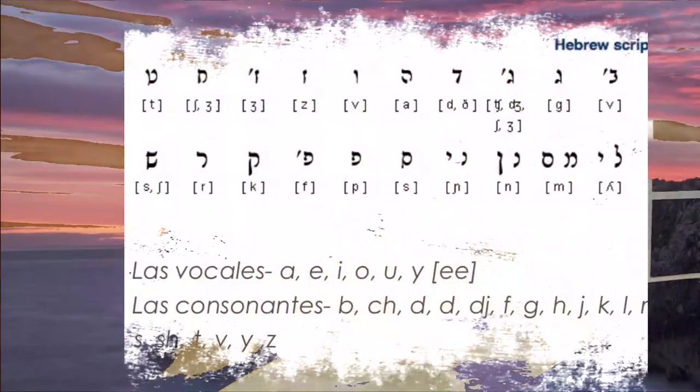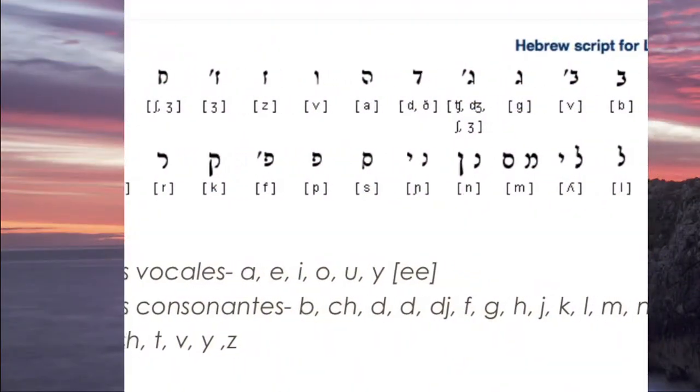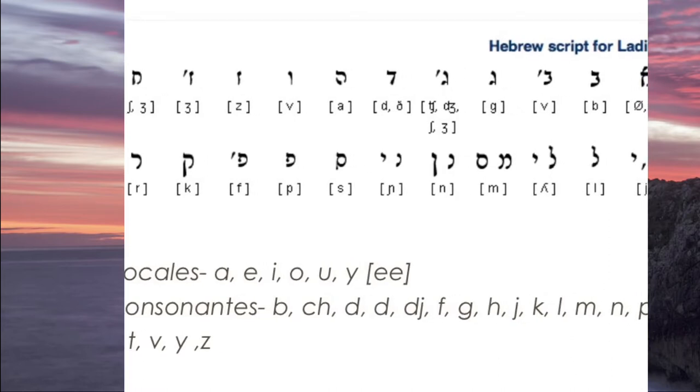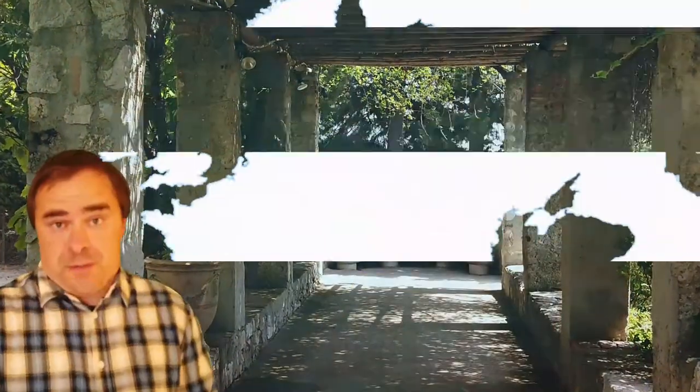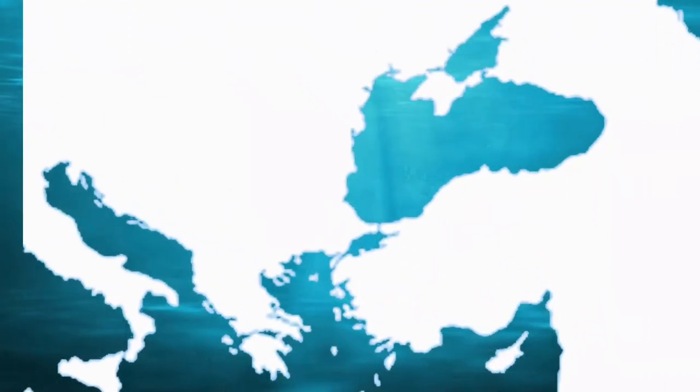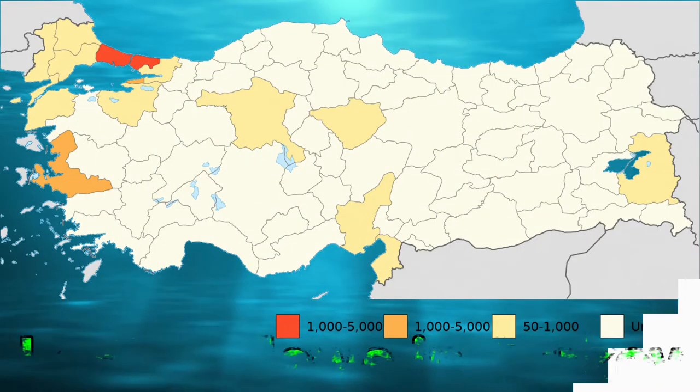Historically, Ladino was written in the Rashi script, a cursive form of the Hebrew alphabet. It's also been written in the Eastern Cyrillic script, and quite recently in the standard Hebrew alphabet. But today, the Latin alphabet is more of the standard used, partially because there are groups in Turkey who speak this language, and Turkey has a version of the Latin alphabet, so they've taken that as their standard form.